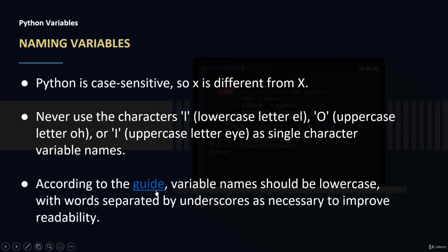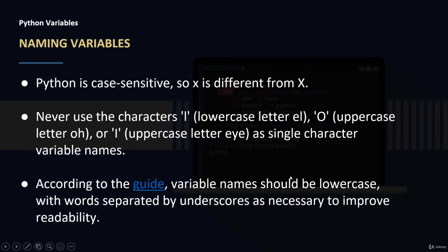According to the Python documentation and its style guide, variable names should be lowercase, with words separated by underscores as necessary to improve readability. So single-word names should be all lowercase, and if more than one word is needed, separate them with an underscore — the whole variable name should be all lowercase.